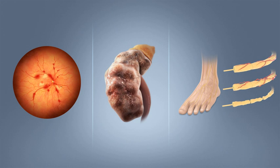There is no known preventive measure for type 1 diabetes. Type 2 diabetes — which accounts for 85–90% of all cases worldwide — can often be prevented or delayed by maintaining a normal body weight, engaging in physical activity, and eating a healthy diet. Higher levels of physical activity more than 90 minutes per day reduce the risk of diabetes by 28%. Dietary changes known to be effective include maintaining a diet rich in whole grains and fiber, and choosing good fats such as the polyunsaturated fats found in nuts, vegetable oils, and fish.